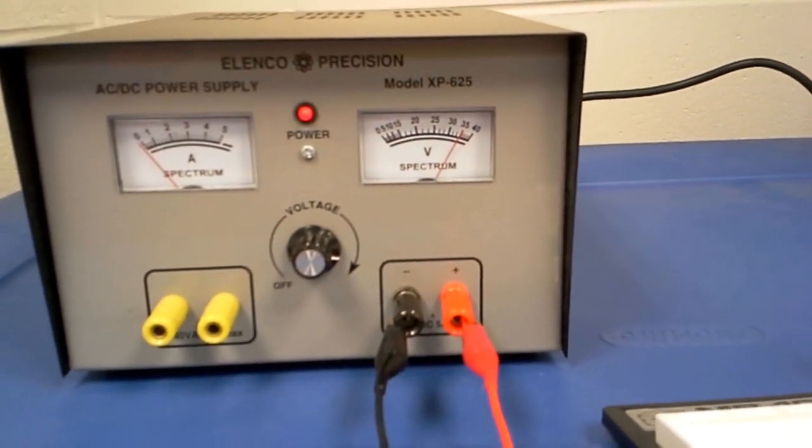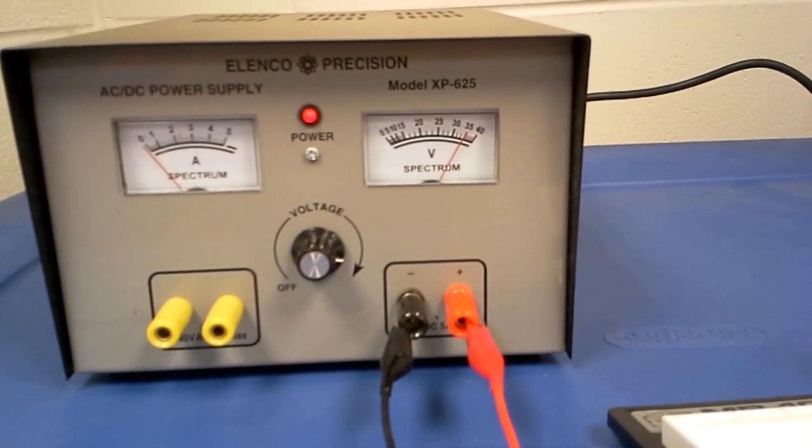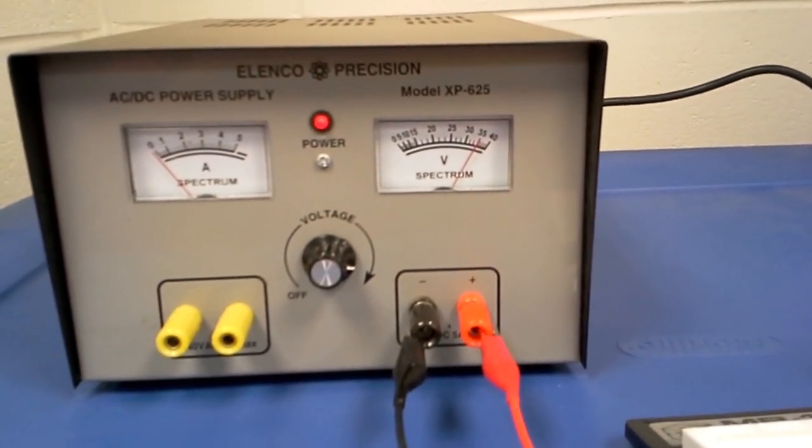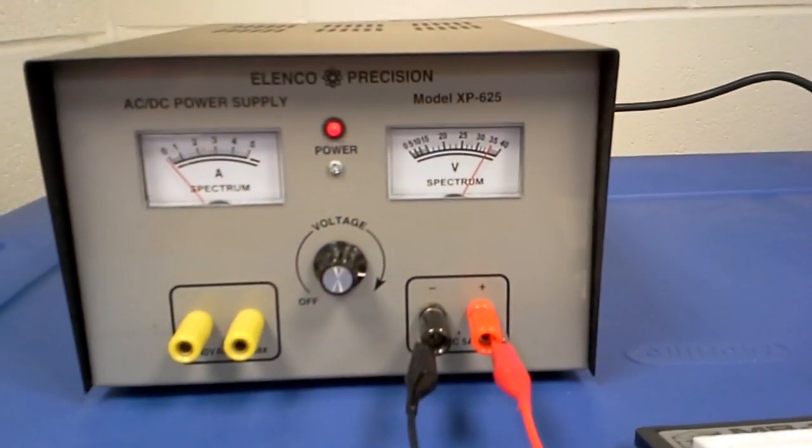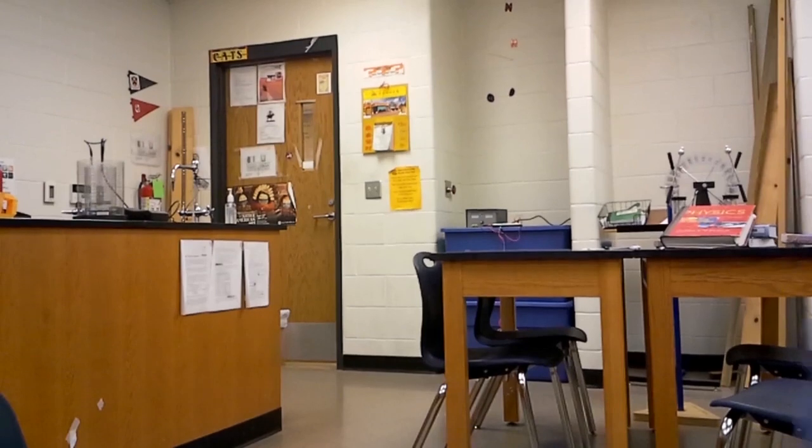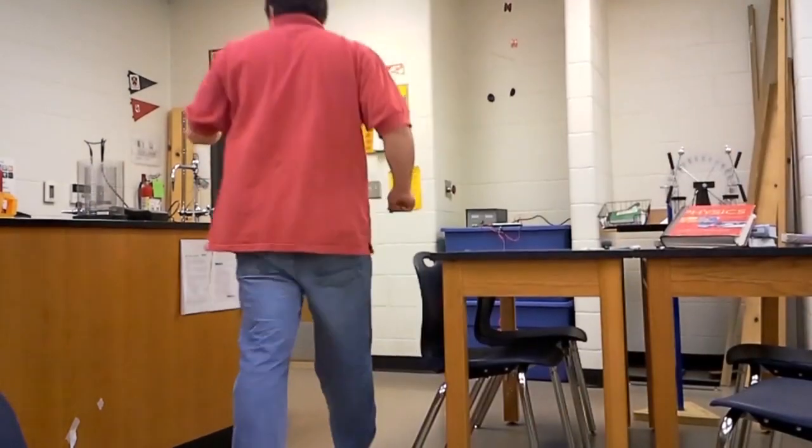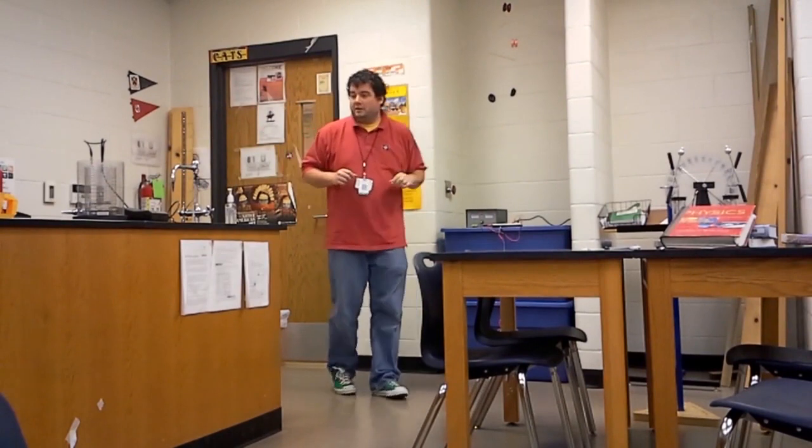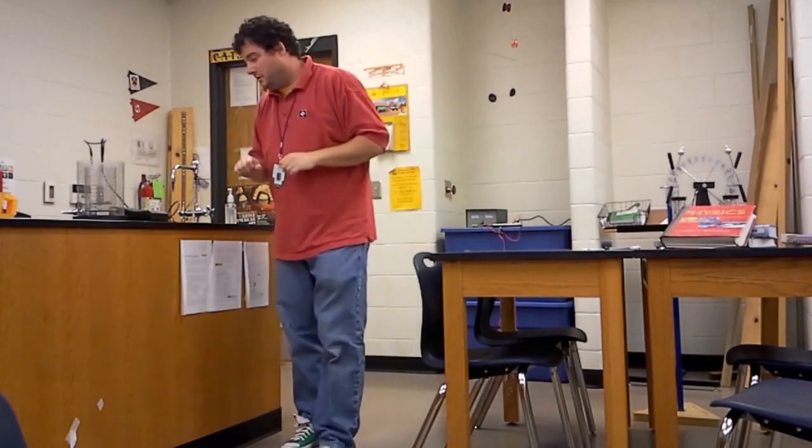And that will put a known amount of charge on this capacitor. We'll then hook it up across the Faraday ice pail, measure the voltage on the electrometer, and we'll be able to figure out what the capacitance is for that setup. We're now going to take our capacitor and we're going to use it to figure out how much capacitance this Faraday ice pail here has.